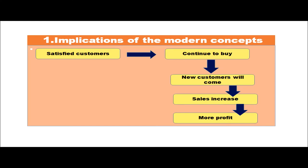As you can see in this diagram, satisfied customers continue to buy the same product — which we call brand loyalty — and new customers also come because satisfied customers, by word of mouth, tell others to buy that product. When these two things happen, sales automatically increase, which leads to more and more profit.